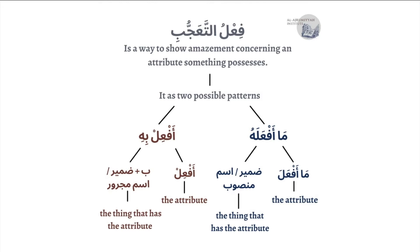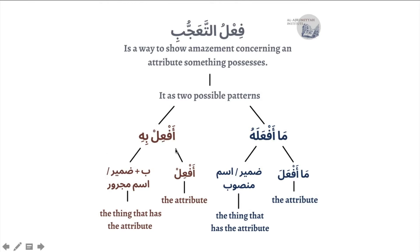The two patterns are أَفْعِلْ بِهِ and مَا أَفْعَلَهُ, followed by an اسم منصوب. We're going to start with the first pattern, أَفْعِلْ بِهِ. So if I have an attribute in Arabic like طويل, which means tall, or حسن, which means good, I'm going to put that attribute on the pattern of أَفْعِلْ. For example, طويل becomes أَطْوِلْ and حسن becomes أَحْسِنْ.